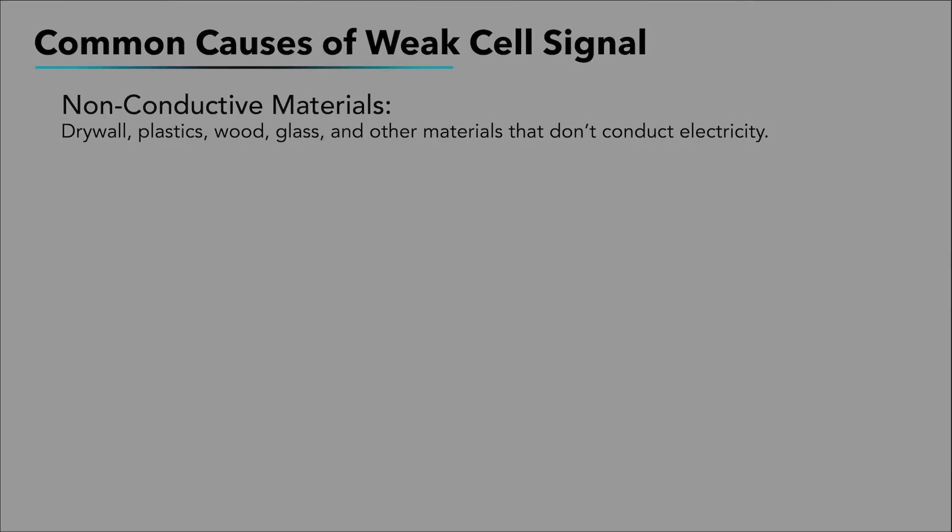While there are many, some of the most common causes of a weak cell signal include non-conductive materials like drywall, plastics, wood, glass, and other materials that don't conduct electricity.